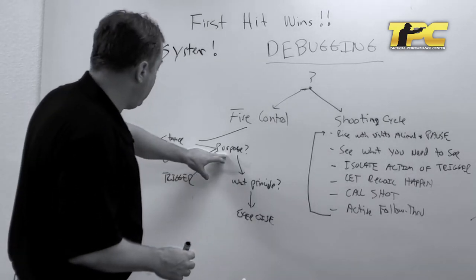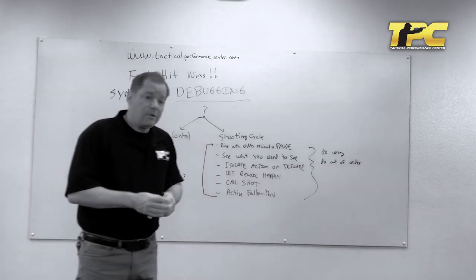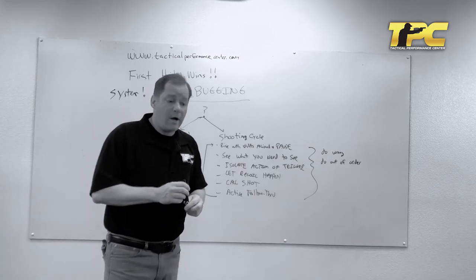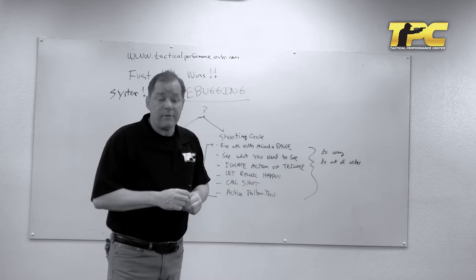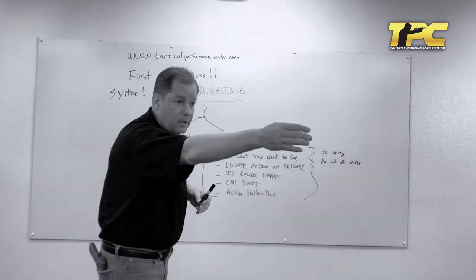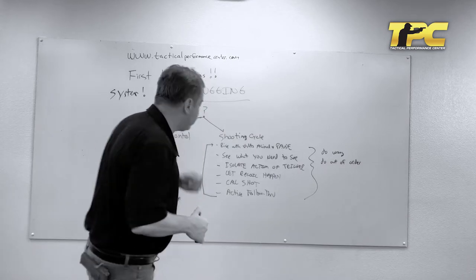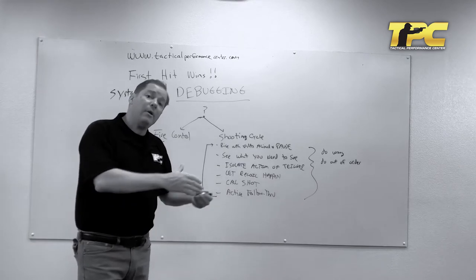Now each of those have a purpose. For instance, the stance. One of the purposes is to provide natural point of aim. Another purpose is to provide recoil management, which you've seen in other videos I've done. We call management being it comes back to center and it comes back passively.